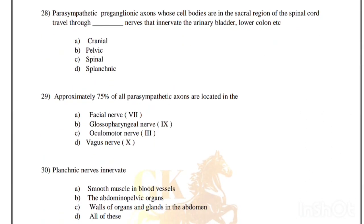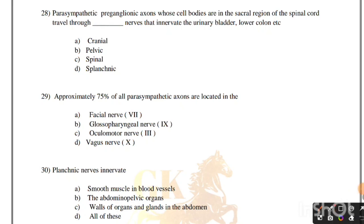Parasympathetic preganglionic axons whose cell bodies are in the sacral region of the spinal cord travel through which nerves to innervate the urinary bladder and lower colon? Options: cranial, pelvic, spinal, splanchnic. Correct answer is option B, pelvic.